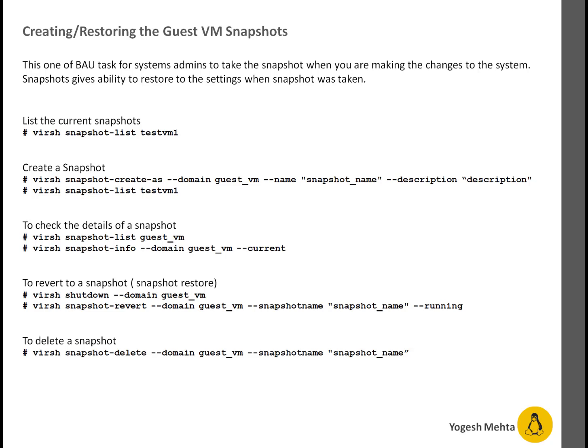Once that is done, you can list the snapshots to verify whether the new snapshot you just took is visible. If you want to check detail about a particular snapshot, you can run: virsh snapshot-info --domain your-domain-name --current, which will list the current snapshot. If you have to revert, shut down your running VM then use: virsh snapshot-revert --domain your-domain-name and specify which snapshot you want to revert to. In case you want to delete a snapshot, use: virsh snapshot-delete --domain guest-vm and the snapshot name.